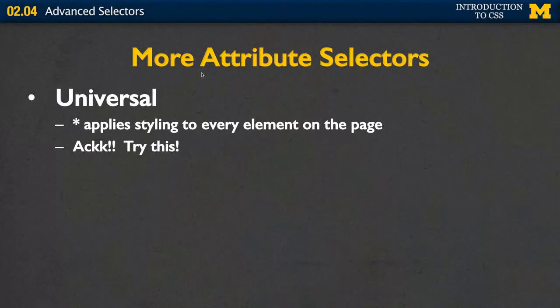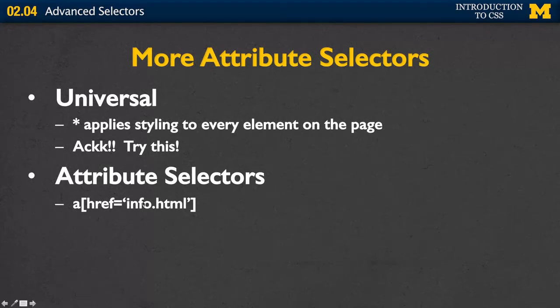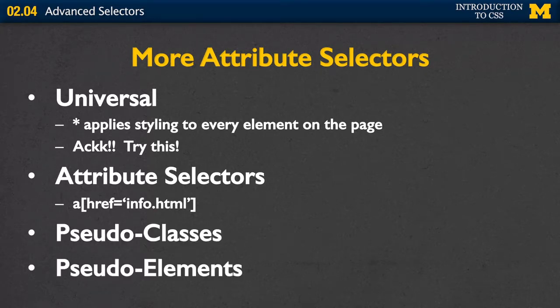In addition to element and DOM relationship selectors, there are a few more worth covering. The universal selector is the star (*) — it applies styling to every single element on the page. Try putting a star with a border style to see it affect everything; it can be useful for debugging. Attribute selectors let you target elements based on their attributes rather than their tags. For example, you could style every link where href equals info.html. We'll also look at pseudo-classes and pseudo-elements later — just another level of targeting specific things you want to style.